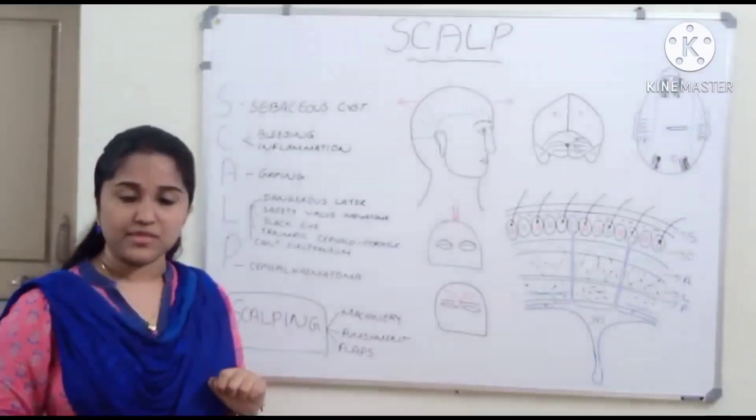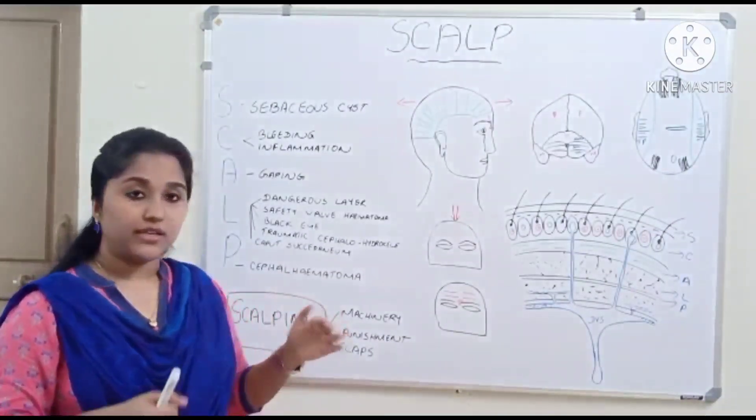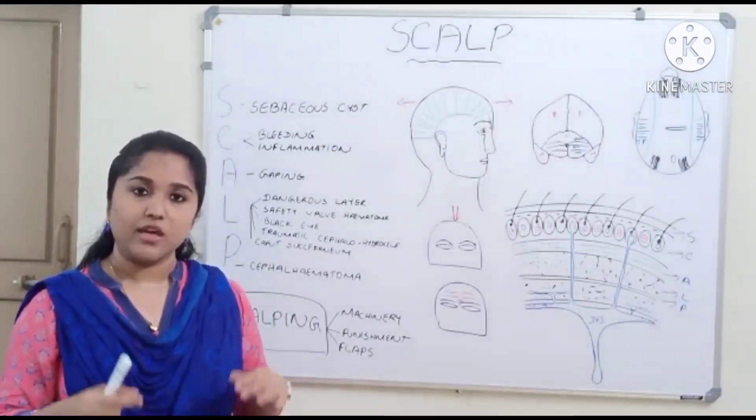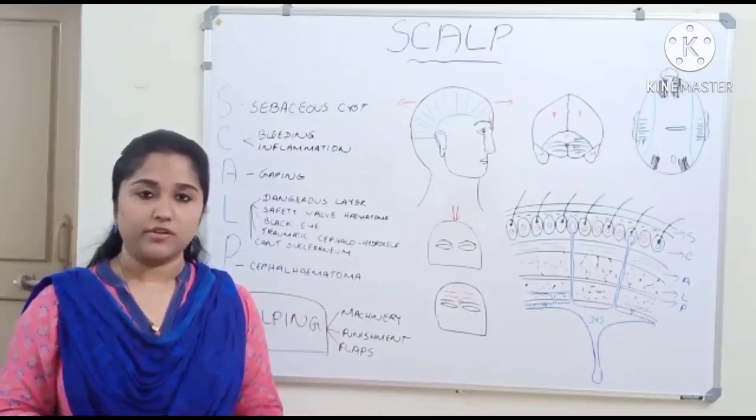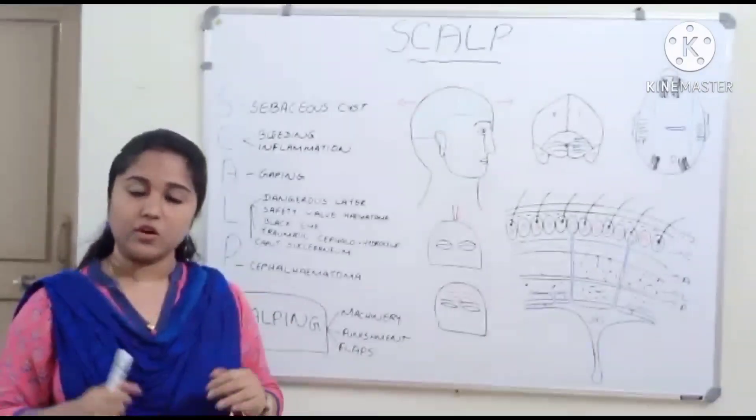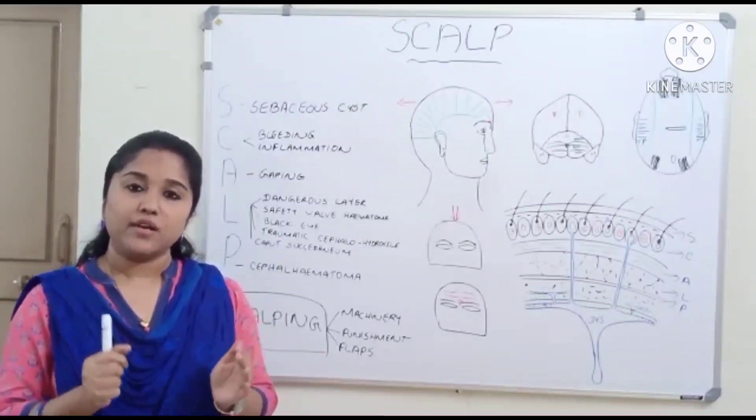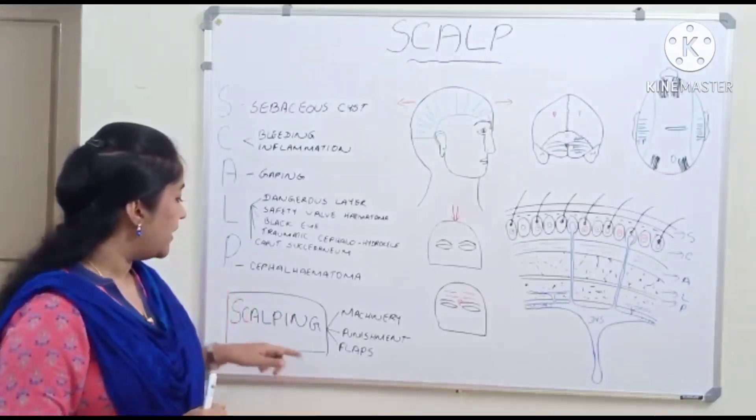The importance of the pericranium is that it is the outer periosteum of the skull. It covers the bone loosely, except in the sutural lines where it is attached to the endocranium. Cephalhematoma: here also there is collection of blood, but the blood collection takes the shape of the bone itself.